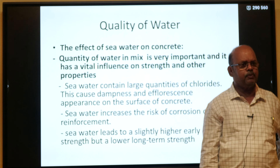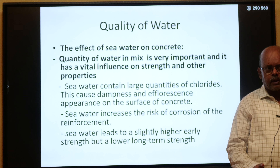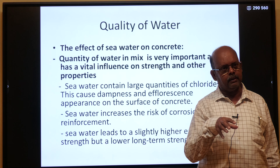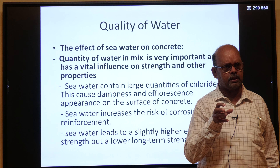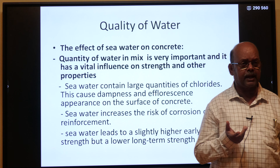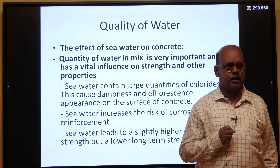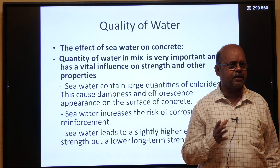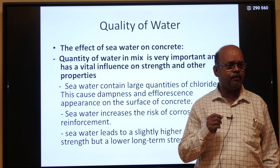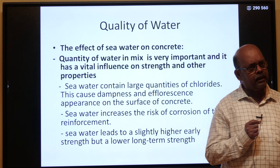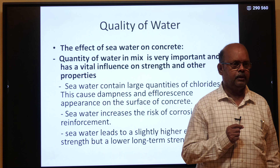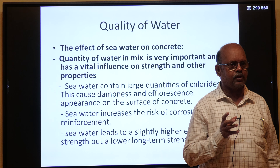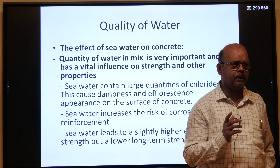The quality of water is an important component for making concrete safe from efflorescence and segregation. Seawater should not be used because it contains a lot of chlorides, which causes dampness and efflorescence and spoils the appearance of the concrete surface. There is also a risk of corrosion, which directly affects the reinforcement bar. We have to use potable water — the same quality of water used for drinking should be used for concreting.